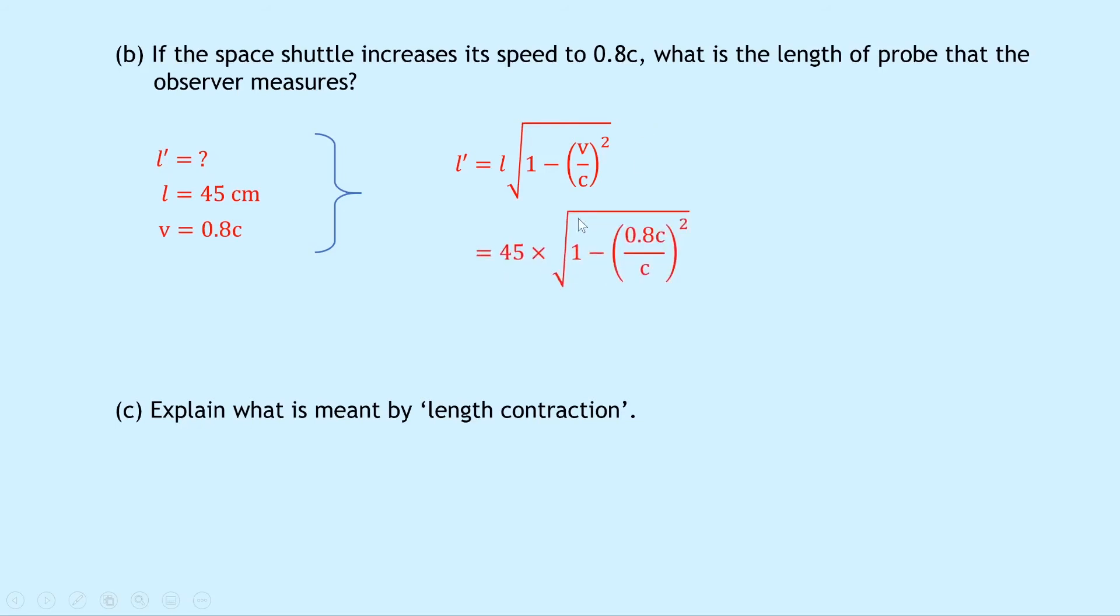Substituting in your numbers this time, you get 45 times the square root of 1 minus 0.8C over C squared. And again cancelling out your C's there, we should get an answer of 27 centimeters once you put that into your calculator.